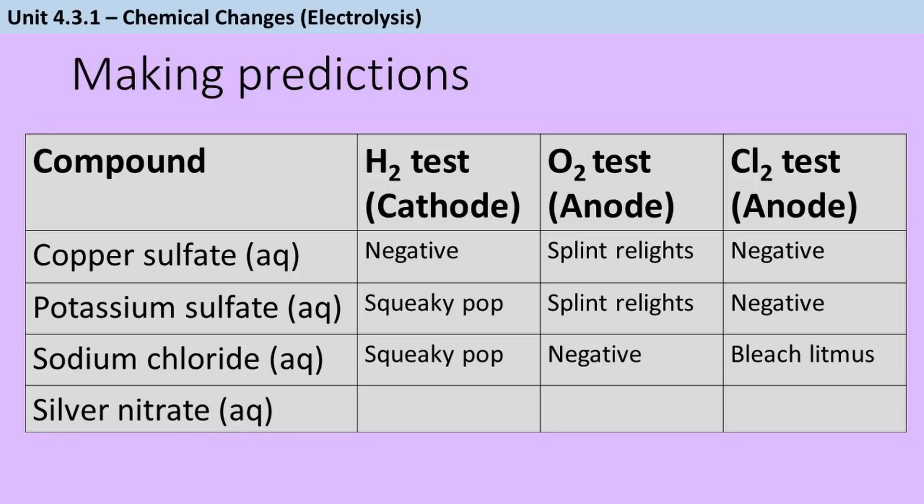Finally, if we look at silver nitrate, silver is less reactive than hydrogen, it's one of those jewellery metals, so the hydrogen will stay in solution. The silver metal will be collected, so we're not going to have a positive test for hydrogen. And then again, we don't have a halide, we don't have an ion from group 7, so there's nothing there to be discharged. So instead, it's not the nitrate, that's not going to happen. We're going to have the hydroxide ion being discharged and that will produce oxygen, so again, our glowing splint will relight.